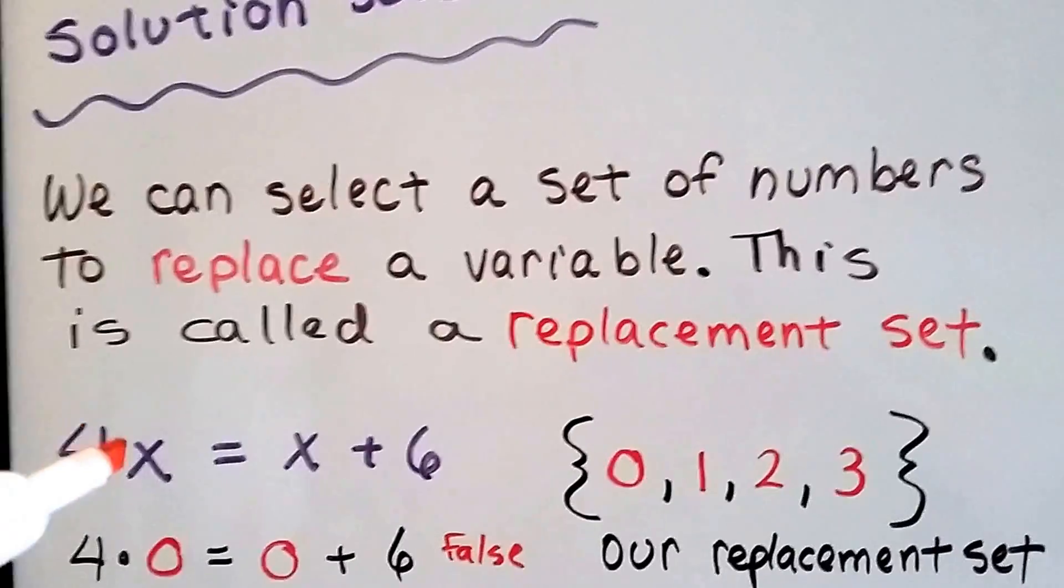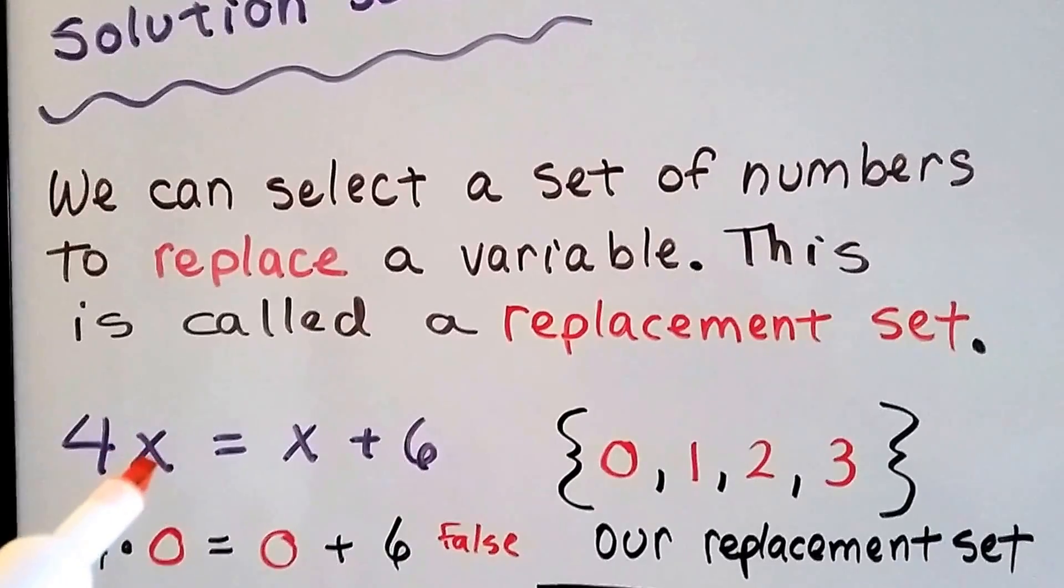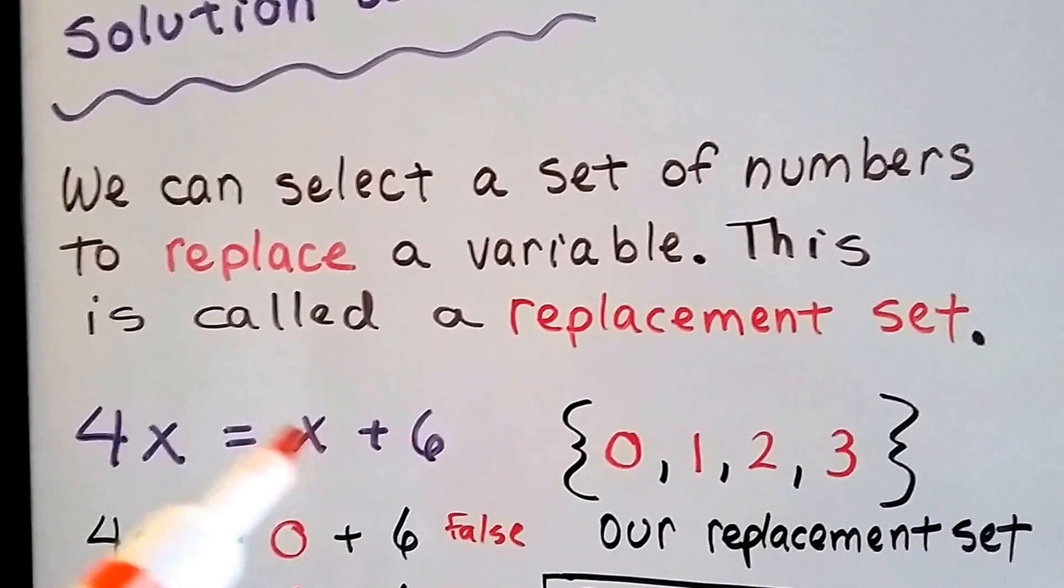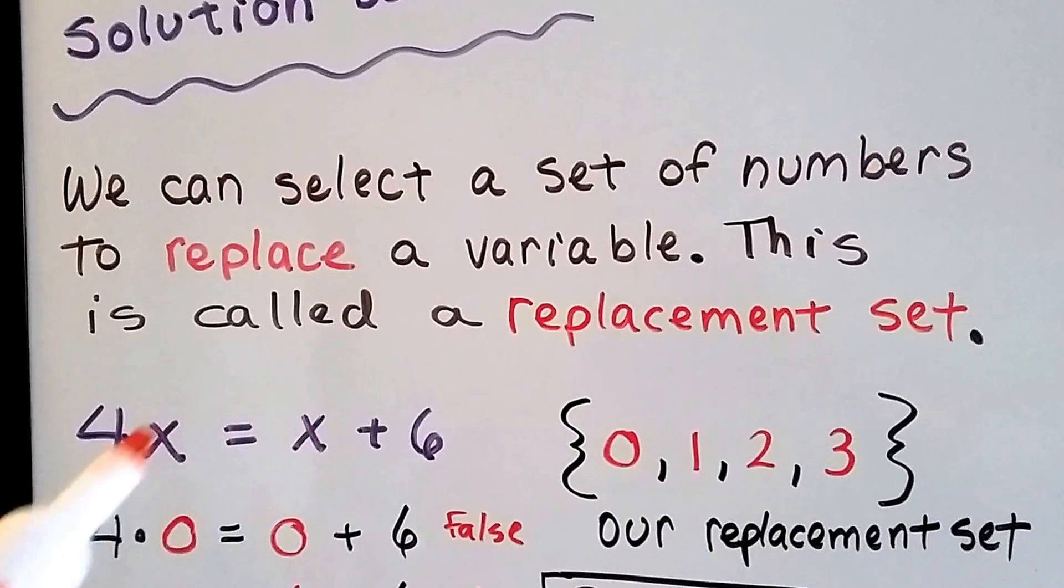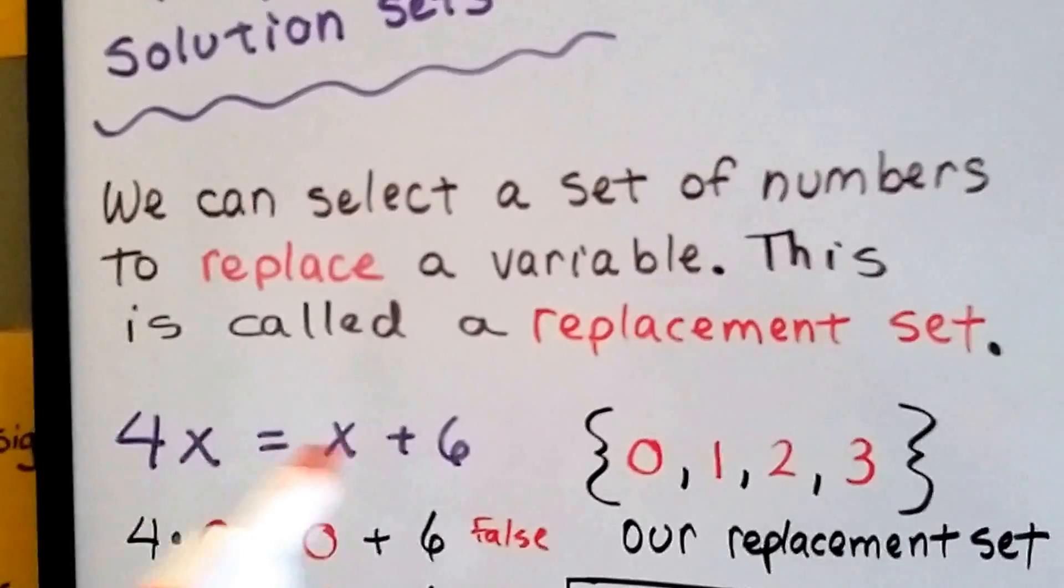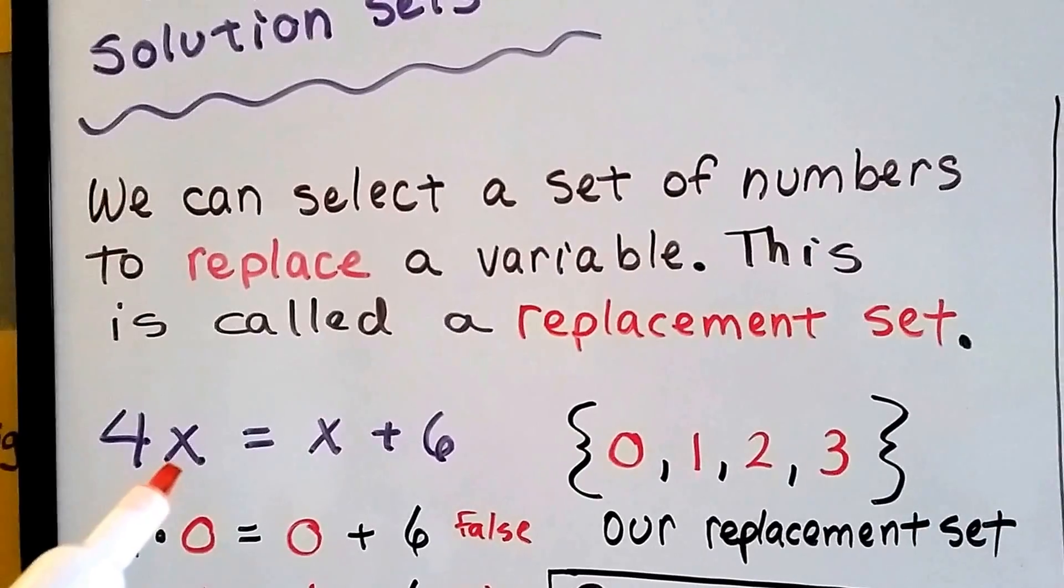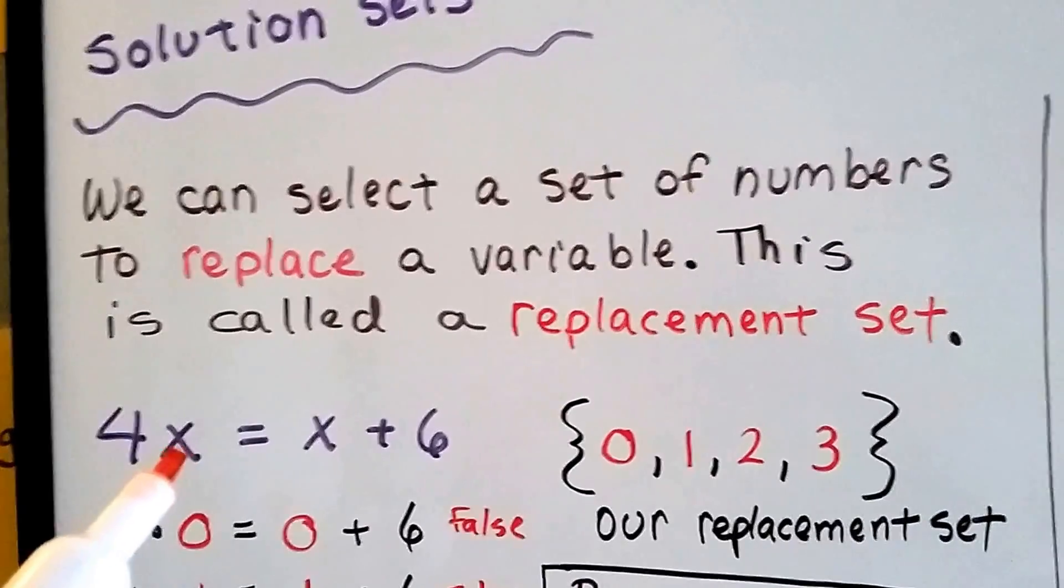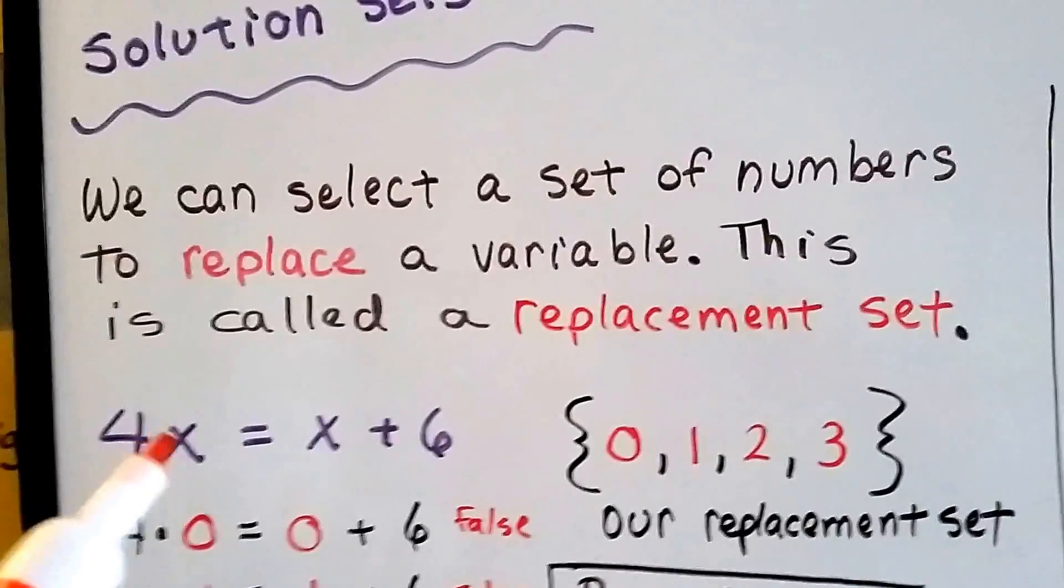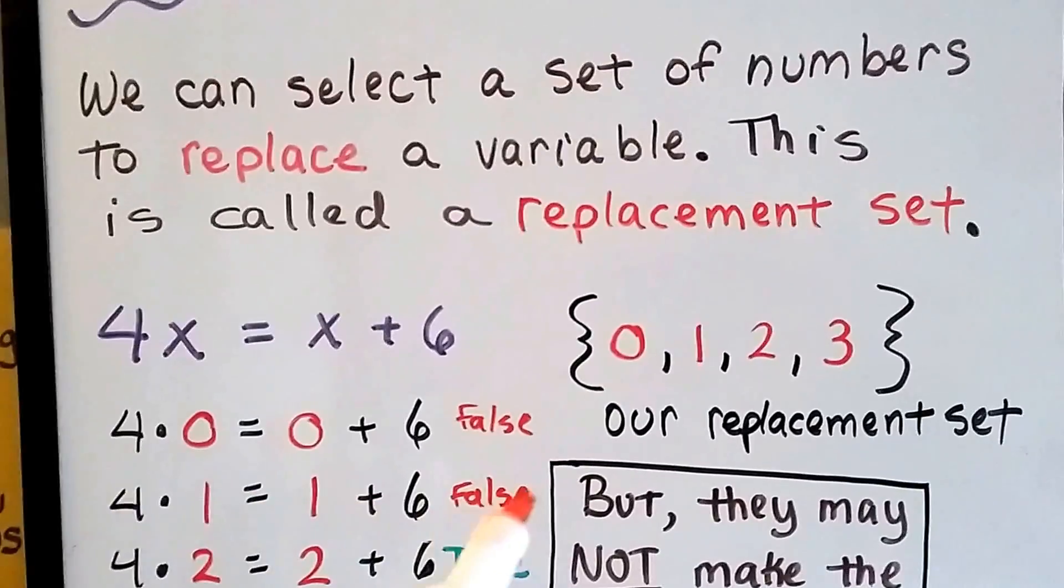See how we have 4x equals x plus 6? Whatever this x equals, it equals the same thing on this side of the equal sign. So it's going to be the same number in an equation. Whatever a variable equals is what it equals for the whole equation or expression. It can't change value. So if x is 1, then it has to be a 1 on this side. Is 4 times 1 equal to 1 plus 6? No, that's false.